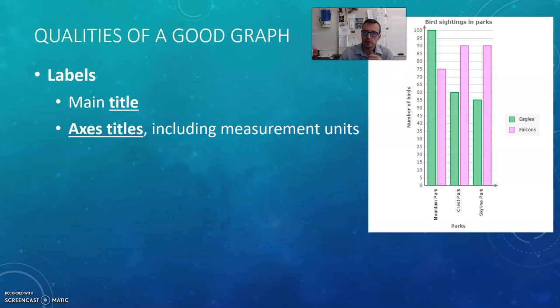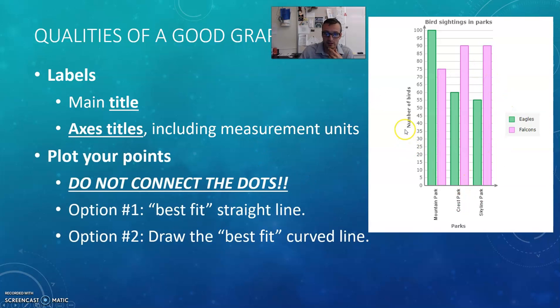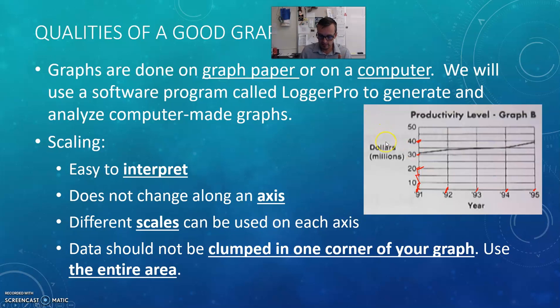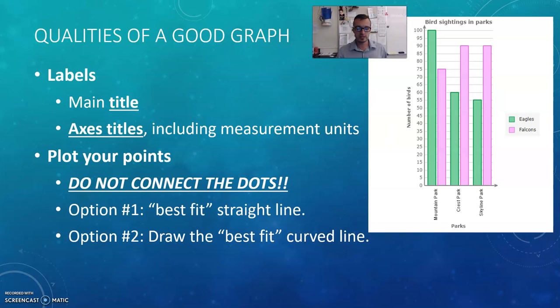Other qualities of a good graph—we want to make sure we know what we're actually trying to tell people. If I look at this graph, I know it's about bird sightings in a park, it's graphing number of birds versus which park we have. Notice it has a title, it has axis labels or axis titles, and including measurements or units. In this case we don't have units, but if we come back to this graph over here, you see it was in dollars in millions. If there is a unit you're communicating, make sure you include those units.